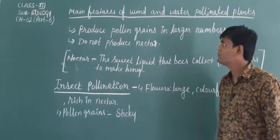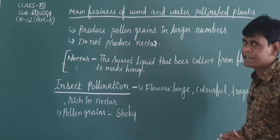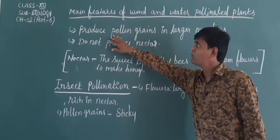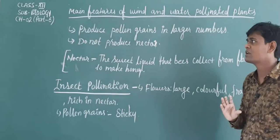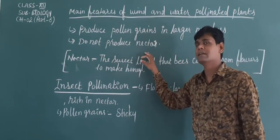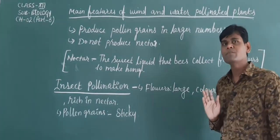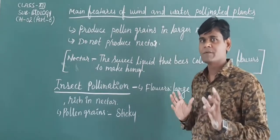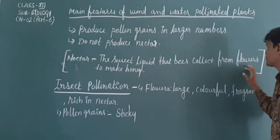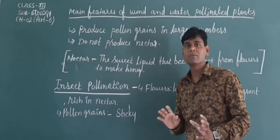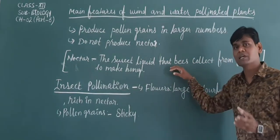Now let me see the main features of wind and water pollinated plants. Wind and water pollinated plants do not produce nectar.